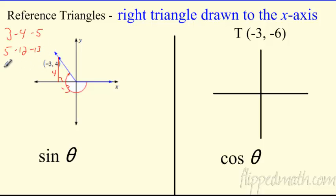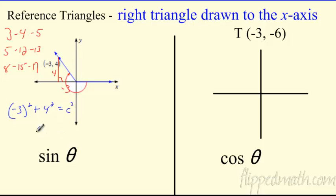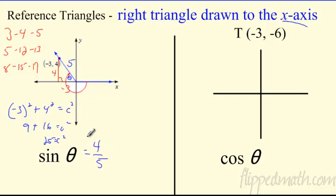Some great Pythagorean triples to remember: 3-4-5, 5-12-13, and 8-15-17. For our point (-3, 4), negative three squared plus four squared equals c squared. That's 9 + 16 = 25, so c = 5. Theta is touching the x-axis, so sine is opposite over hypotenuse: four-fifths. We want exact trig ratios as fractions — no decimals.